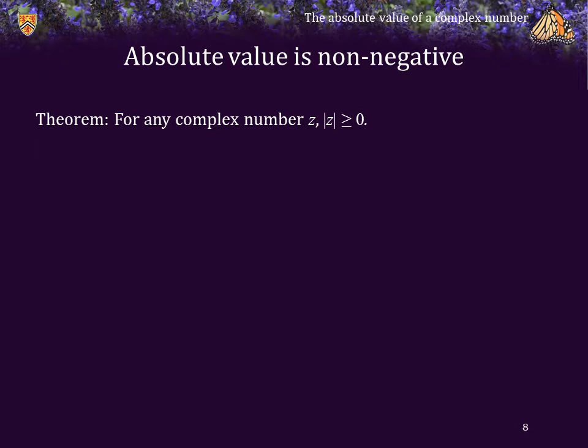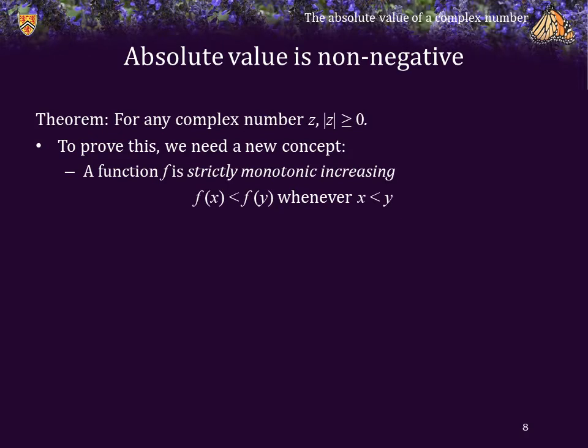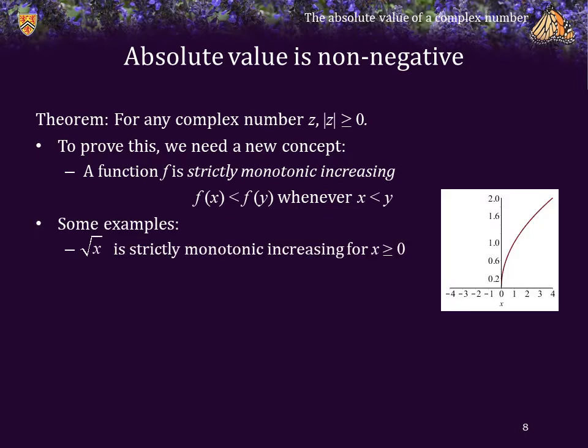Next, a theorem: for any complex number z, the absolute value of z is greater than or equal to 0. To prove this, we need a new concept — or rather, something you already intuitively understand from secondary school, but we're going to give it a name. A function f is strictly monotonic increasing if f(x) is less than f(y) whenever x is less than y. Here are some examples: the square root of x is strictly monotonically increasing for x greater than or equal to 0.